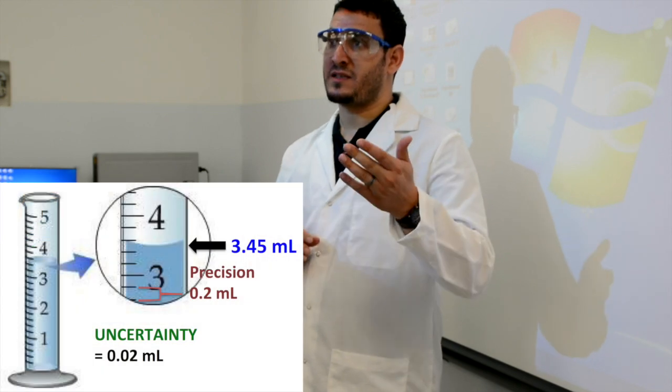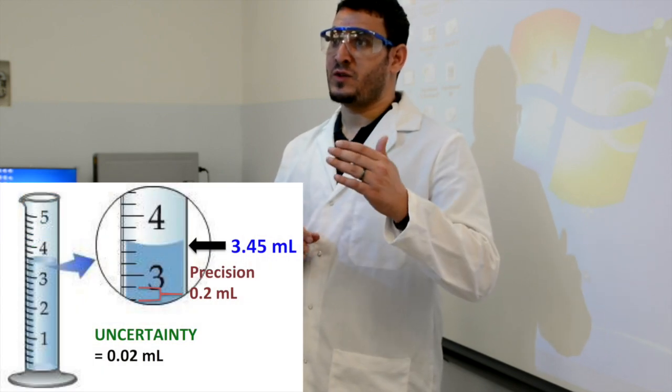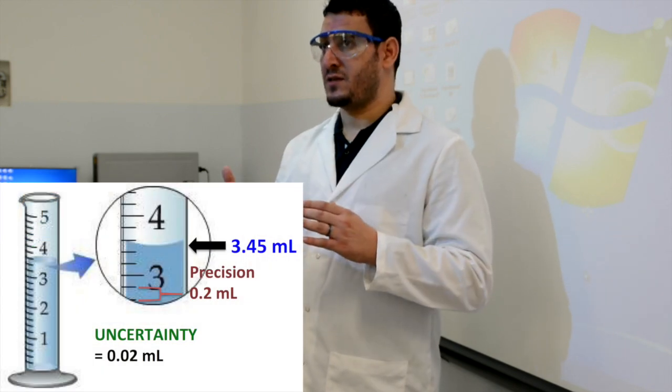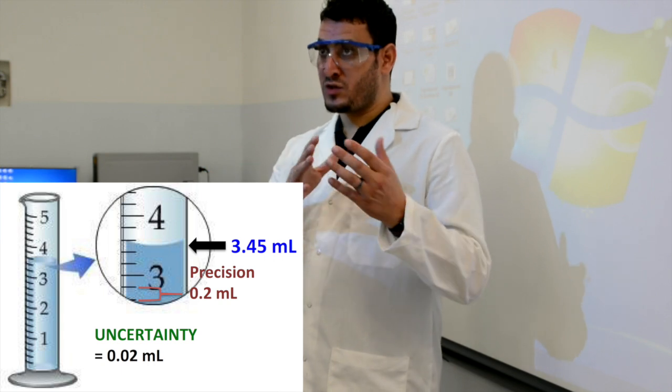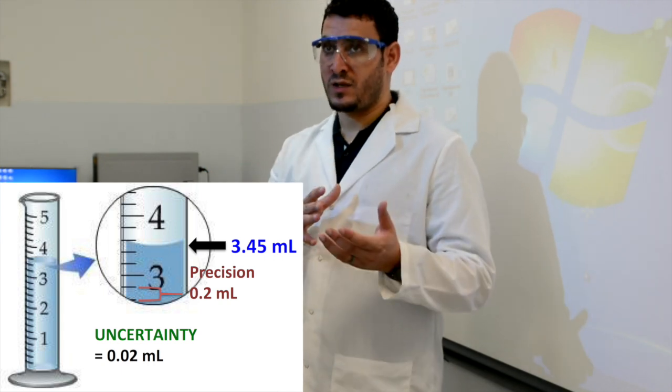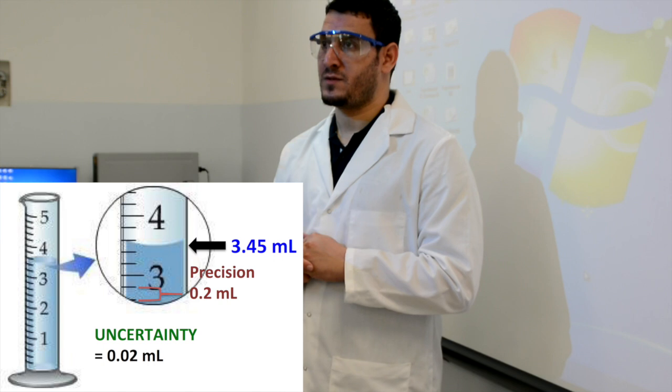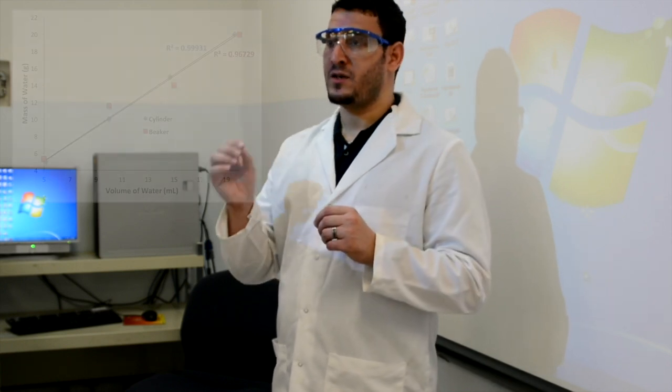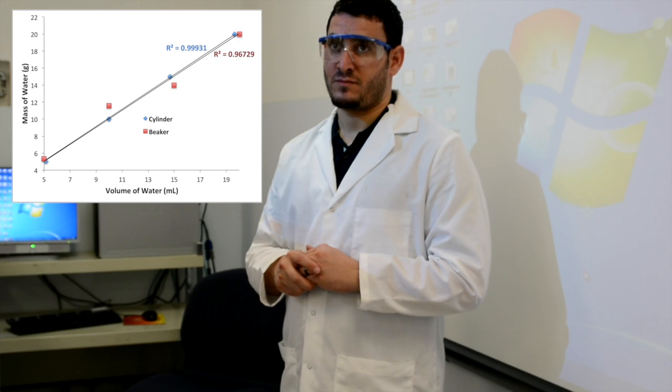For the mass measurements, you record them just the way the balance shows. For the volume, the number of decimal places is based on the uncertainty, which is different between the beaker and the graduated cylinder. To compare the results between the graduated cylinder and the beaker in your lab report, you have to plot a graph — that's all explained in your lab manual.